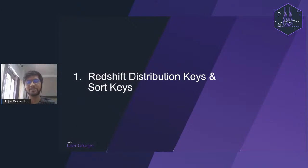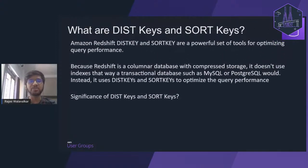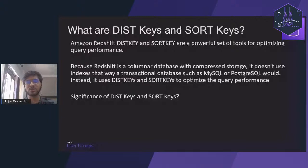Let's start with distribution keys and sort keys. Distribution keys and sort keys are tools used by Amazon Redshift to improve query performance. Redshift is a columnar database — compression happens on columns, and a cluster is created with a leader node and multiple compute nodes. In traditional databases like MySQL and Postgres, query optimization is done using indexes and bucketing. Similarly in Redshift, we have distribution keys and sort keys.